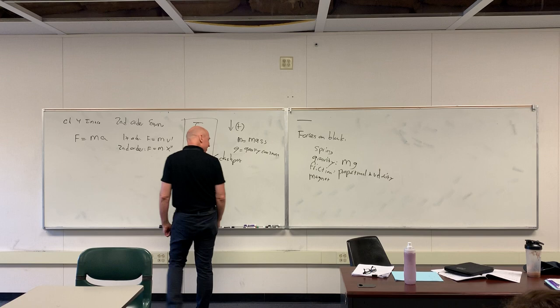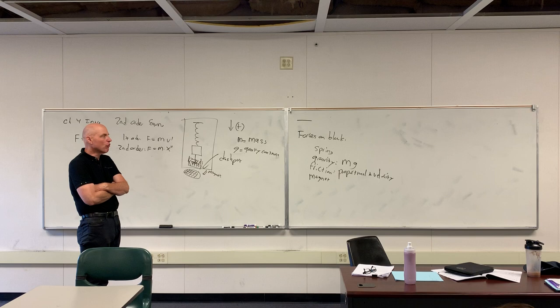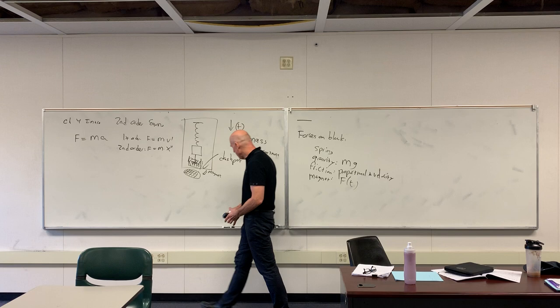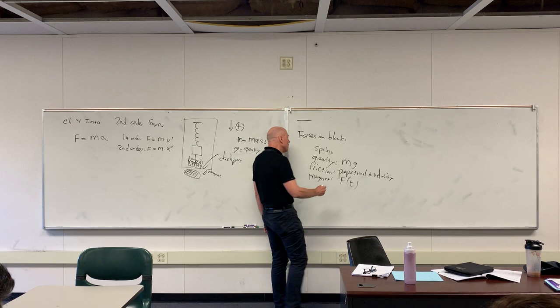Remember we talked about different models of friction - it's proportional to velocity to a power. For this problem, it's going to be proportional to the first power of velocity. The magnet is completely under our control, so we'll just describe what's going to be happening with the magnet. Let me talk about the spring a little bit.